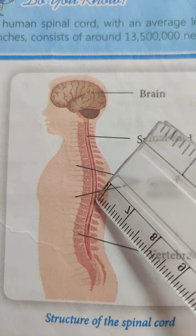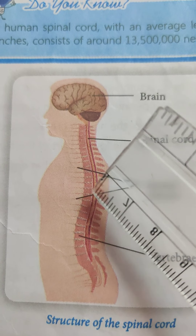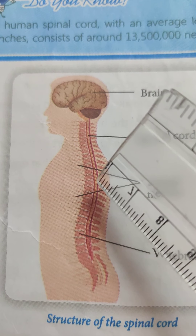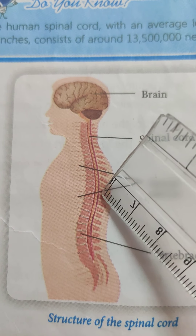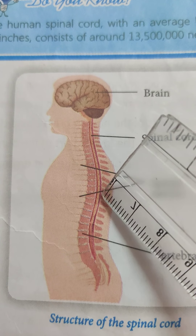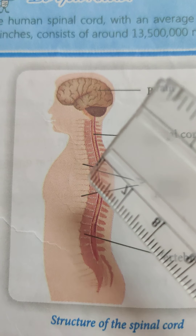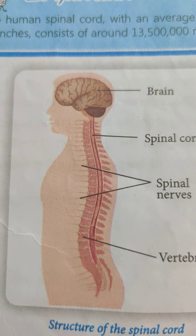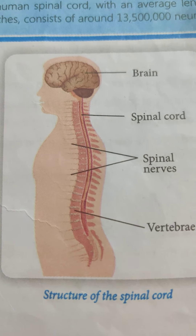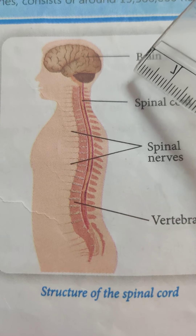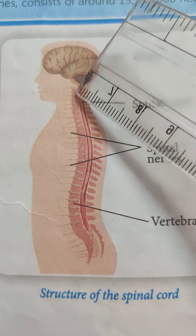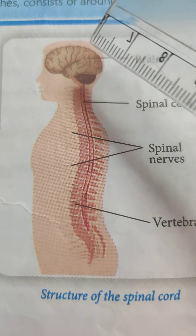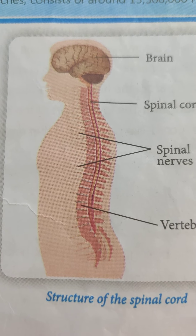For example, we pull away our hand if we accidentally touch a hot object without consciously realizing the reason. The hand is retracted from the hot object before having understood the reason because such action is mediated by the spinal cord and not the brain. Functions of the spinal cord: it mediates reflex action below the neck region, and it conducts stimuli from the skin and muscles to the brain and vice versa.